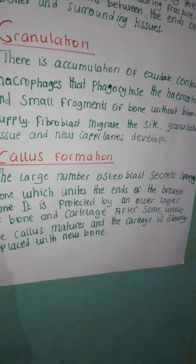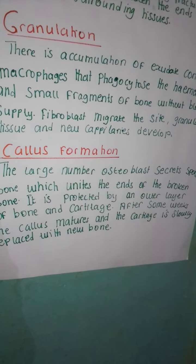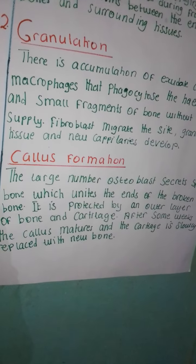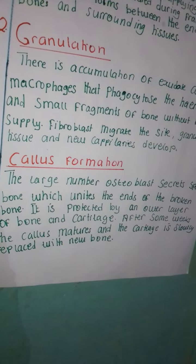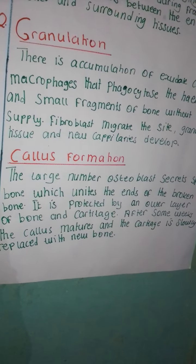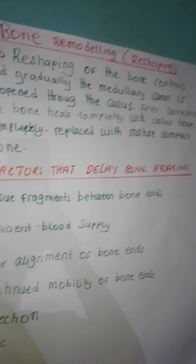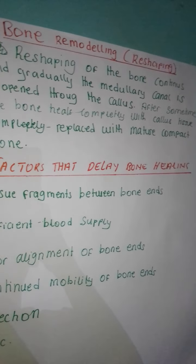Number three: callus formation. A large number of osteoblasts secrete spongy bone which unites the ends of the broken bone. It is protected by the outer layer of the bone. After some weeks, the callus matures and is slowly replaced with new bone.